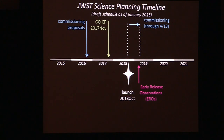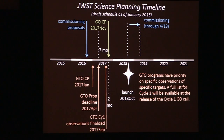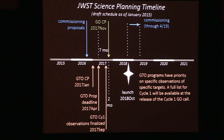The cycle one call is a fiducial point for several other events. The Guaranteed Time Observers — GTOs, the PIs of the instruments and interdisciplinary scientists who've worked to ensure JWST can do the science we want — submit proposals as with every other great observatory. They have first cuts on the science because they've invested the time to make sure the observatory is working. They will put in their proposals for cycle one, with priority protected seven months before the first submission and two months before the cycle one deadline. A full list of their protected observations will be available at the cycle one deadline so you can plan your science accordingly.